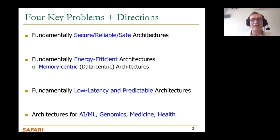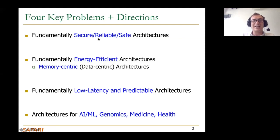There are four key problems and directions in computer architecture being followed heavily in the field today. We're going to talk about a lot of them within the context of memory. How do we design fundamentally secure, reliable, and safe architectures? These are three different things, but they get affected by memory in similar ways. If you get a bit flip in memory, it compromises your security, makes your system unreliable, and compromises your safety.